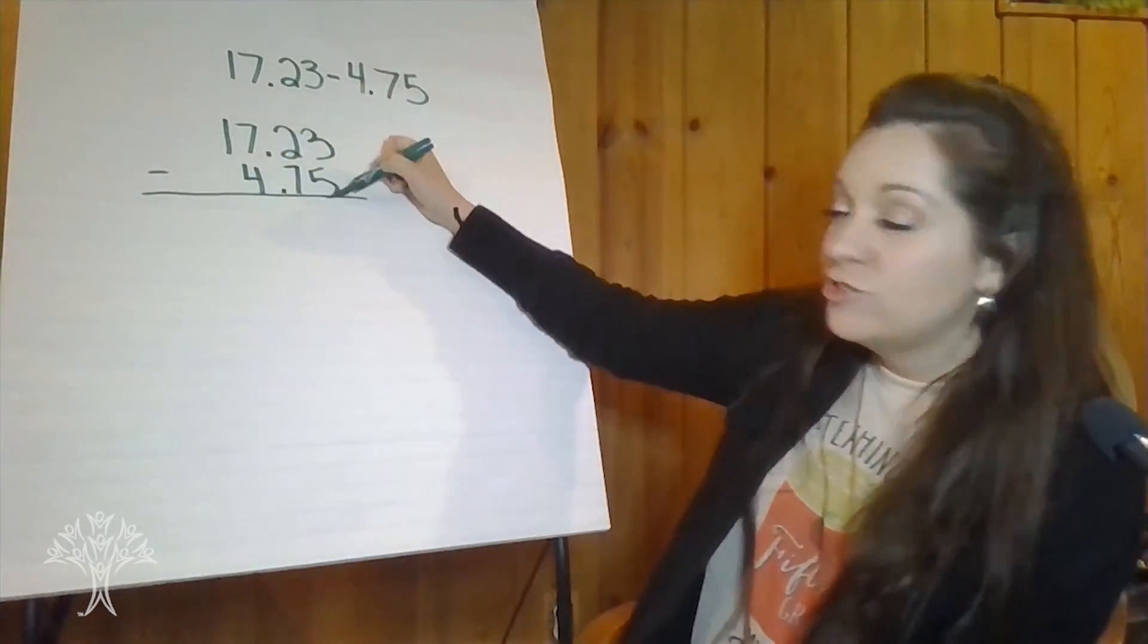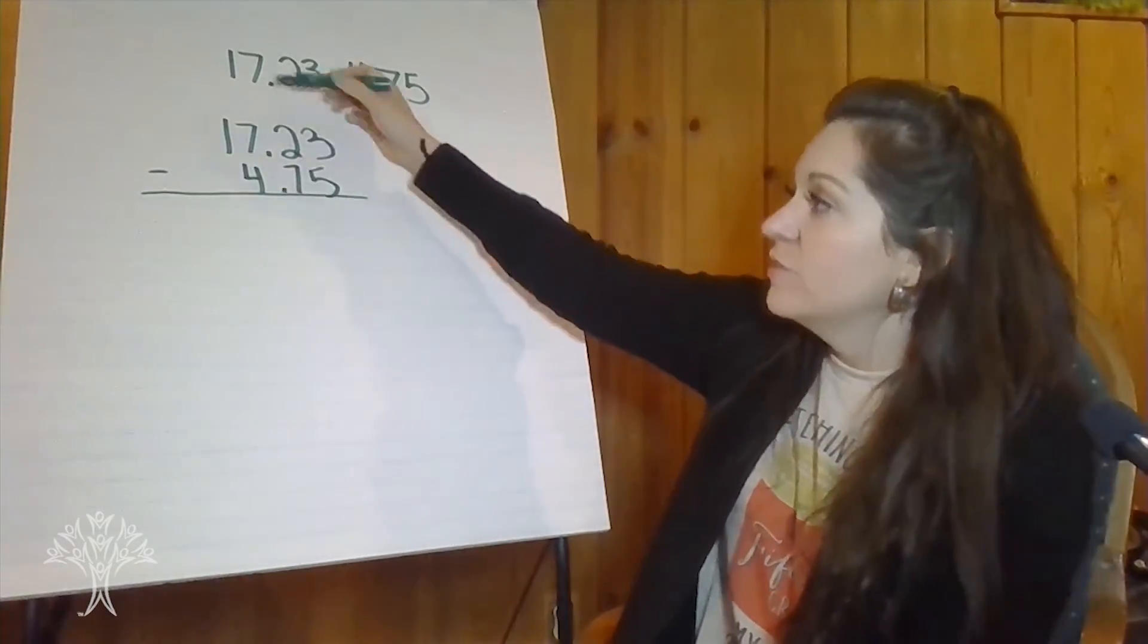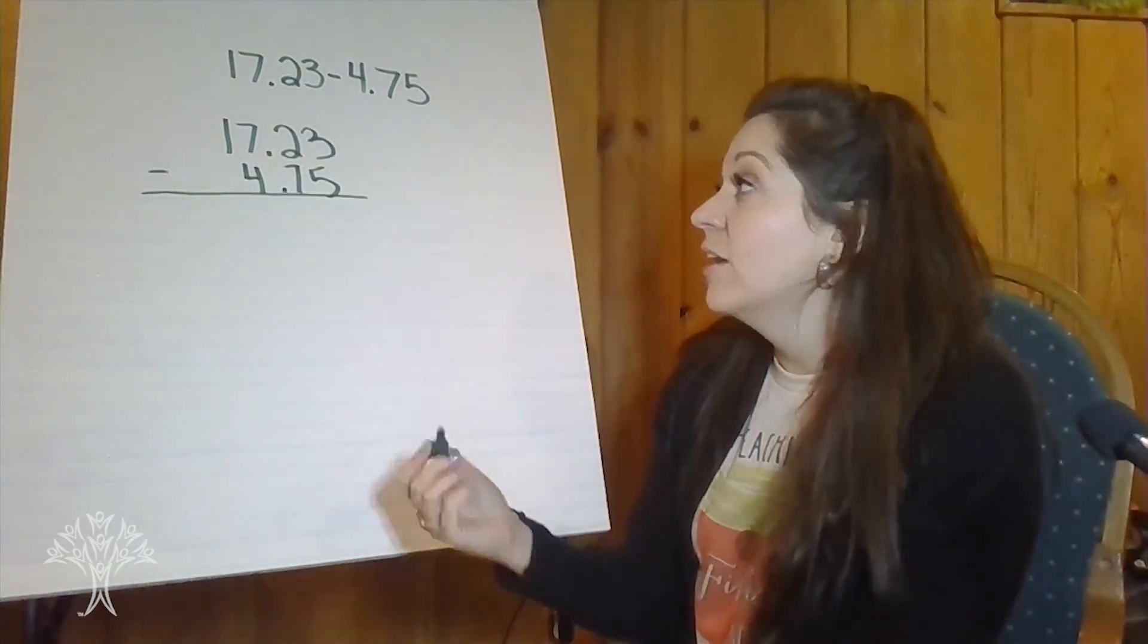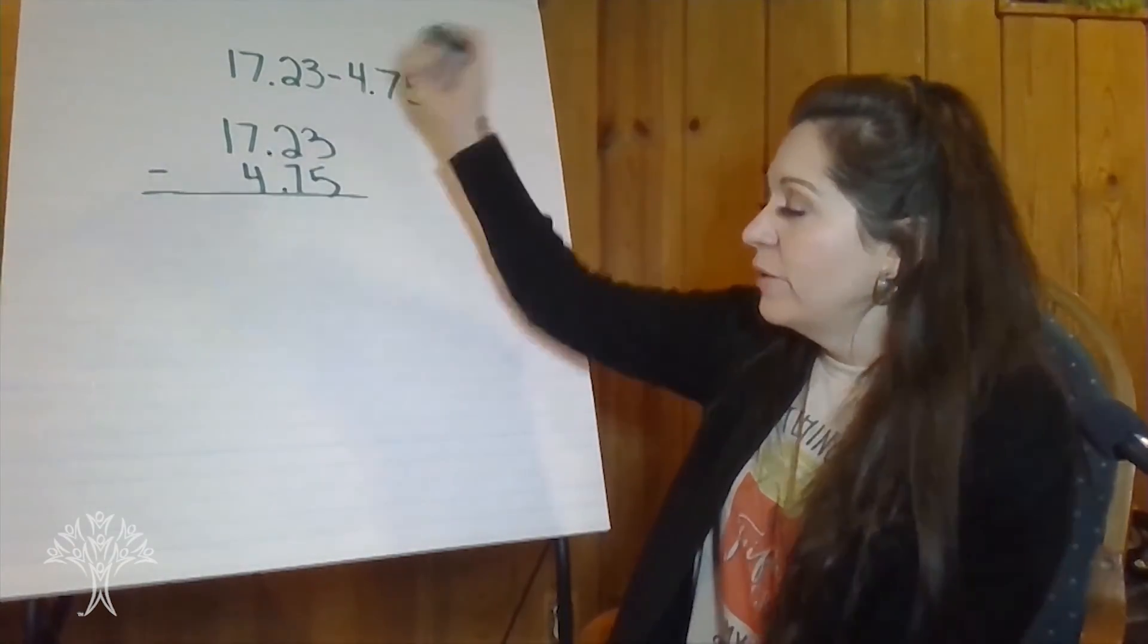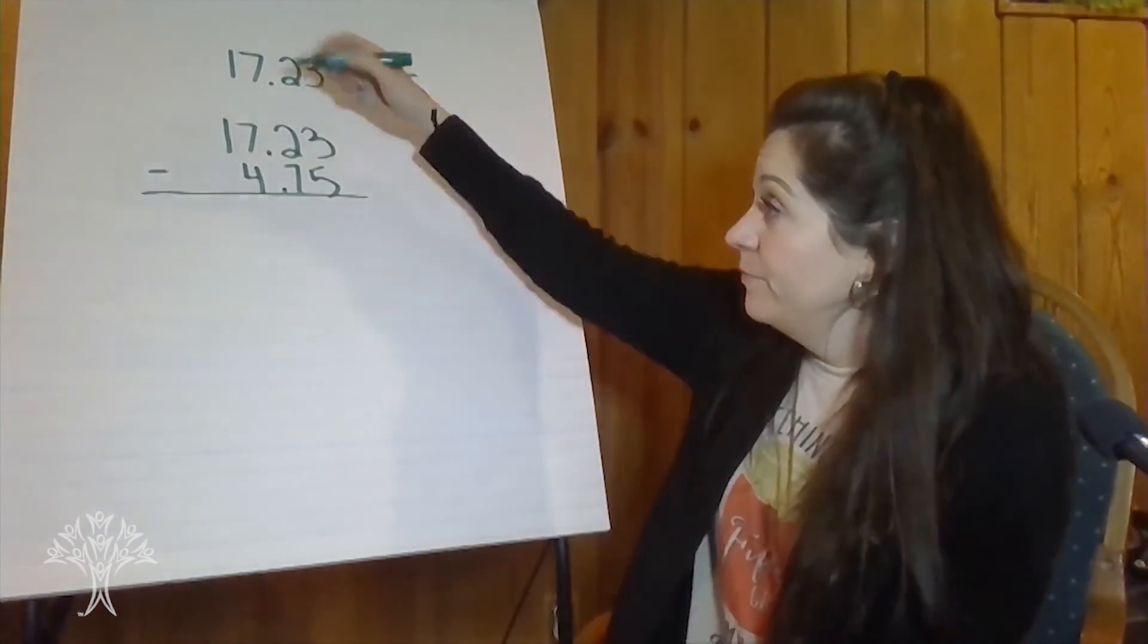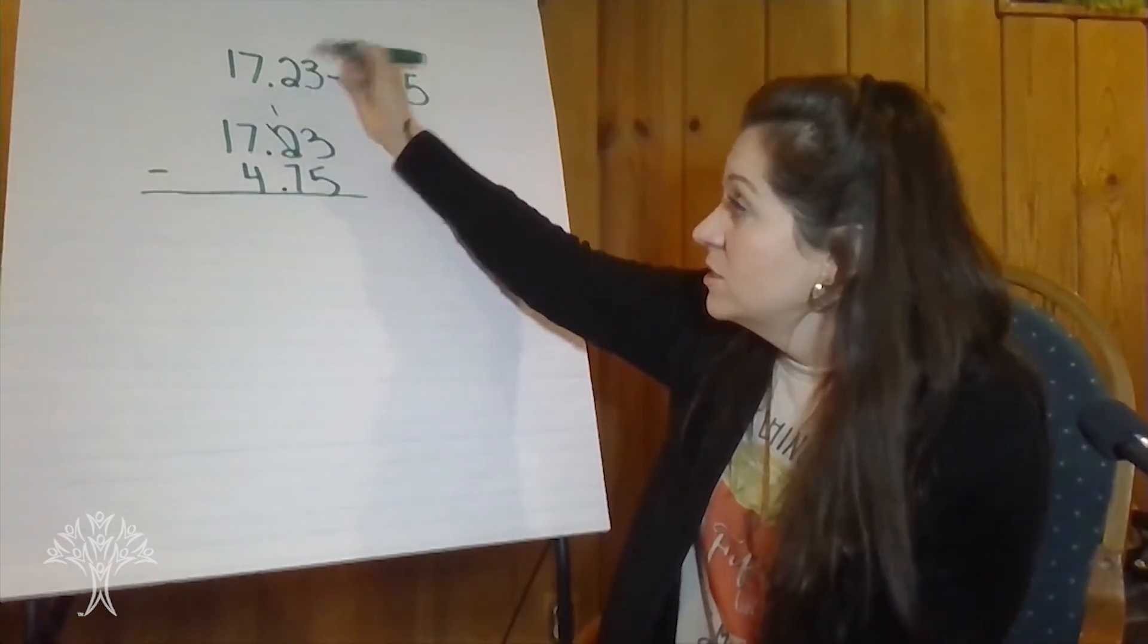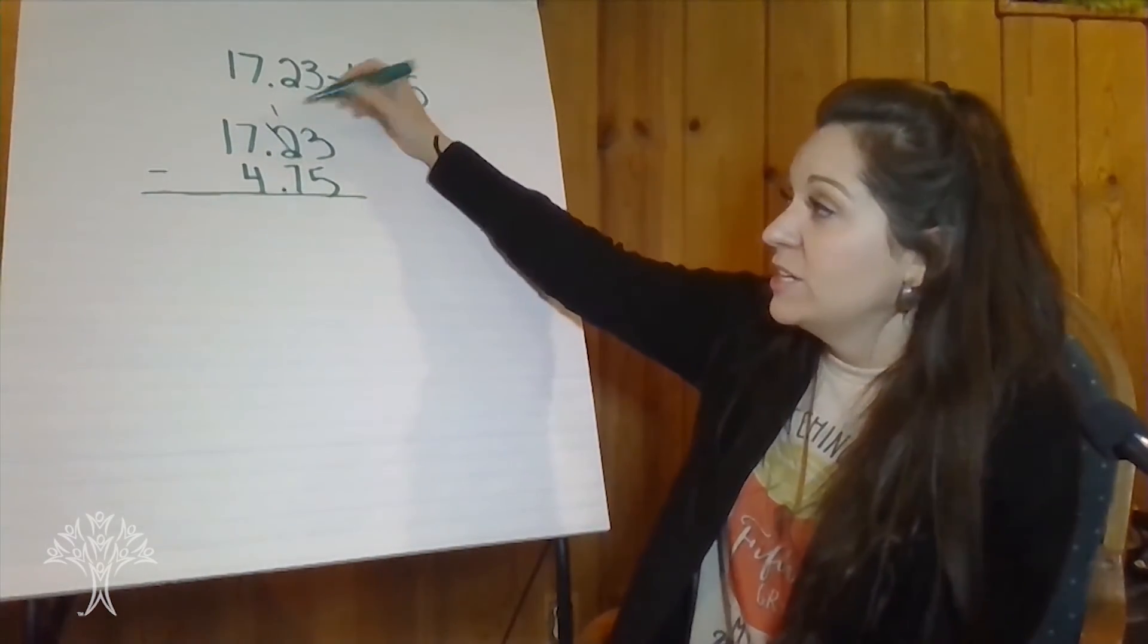Okay, now my hundredths are lined up. Tenths, ones, tens, and so on. Okay, let's do some subtracting. Three hundredths take away five hundredths. Can't do it.